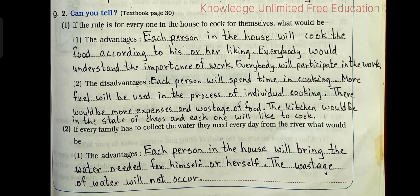Question number 2: Can you tell? Number 1: If the rule is for everyone in the house to cook for themselves, what would be the advantages? Answer: Each person in the house will cook the food according to his or her liking. Everybody would understand the importance of work, and everybody will participate. The disadvantages: Each person will spend time cooking. More fuel will be used. There would be more expenses and wastage of food, and the kitchen would be in a state of chaos.